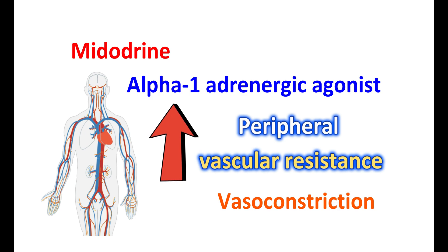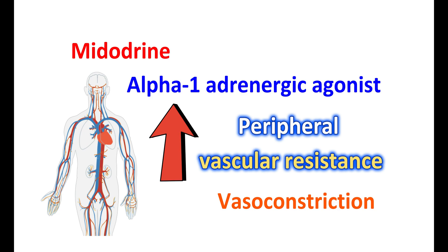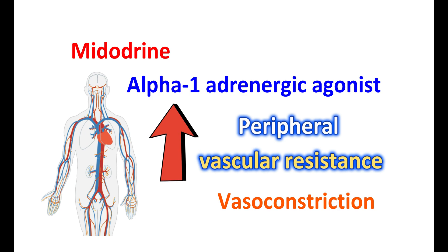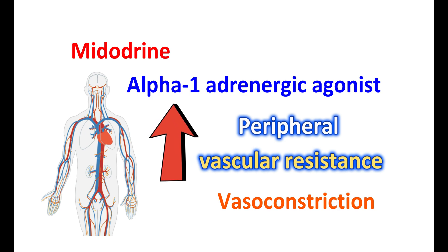Normally, this rise in blood pressure is required when you change your posture. Therefore, Midodrine can help when you rise from a sitting, standing, or supine position. Your systolic and diastolic blood pressures are increased to counteract orthostatic hypotension.